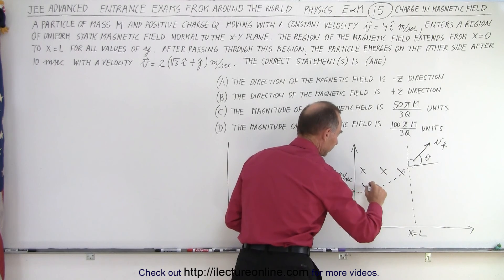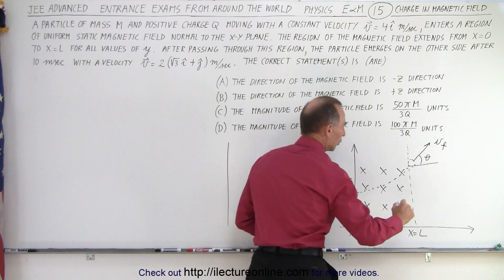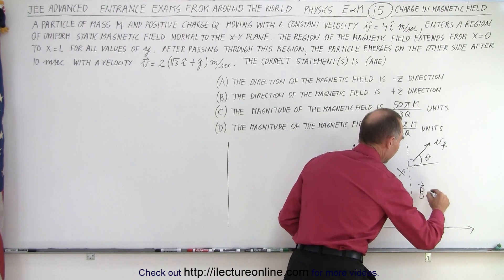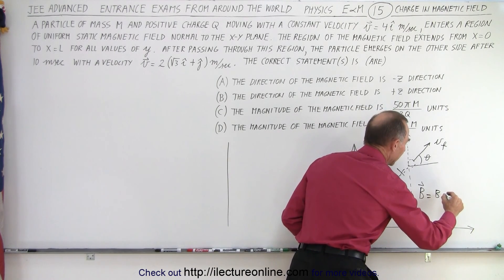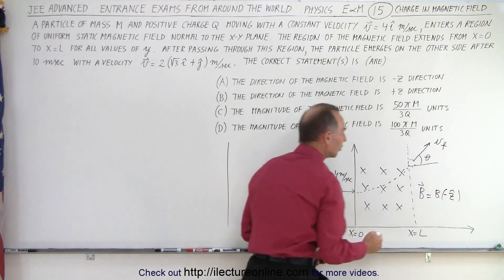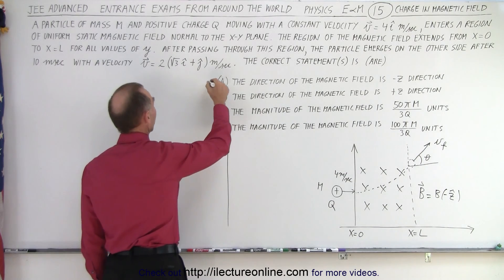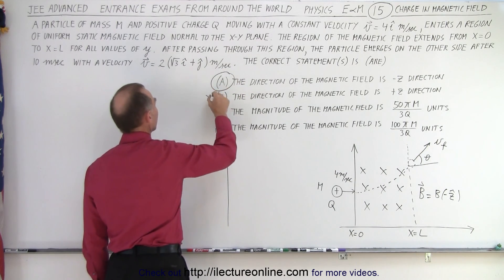So the magnetic field will look like this, which means that the B field is equal to the magnitude of B in the negative z direction, so minus z direction. It's going to point into the board, that means A is correct and B must be wrong.